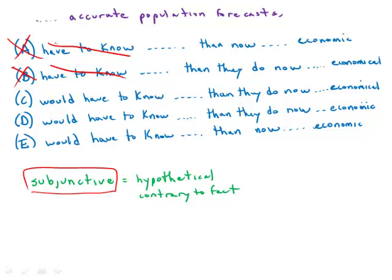So the second split, we get this split between then now versus then they do now. And then now, although it is shorter, in this case it's too short. And this is actually one of the instances where shorter is not better in GMAT sentence correction. They have to know a great deal more than now. That's awkward and incorrect. The comparison is between what they know now and what they would know then. So they would have to know a great deal more than they do now. That is the correct construction.